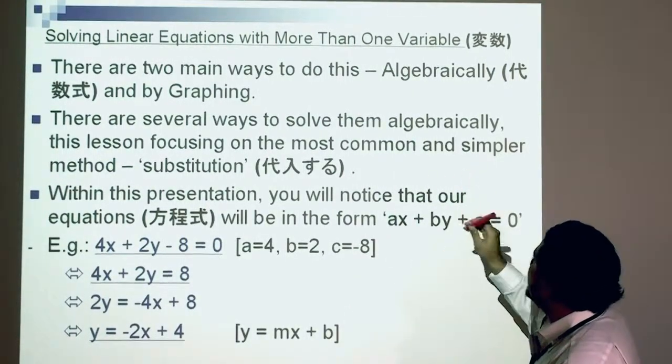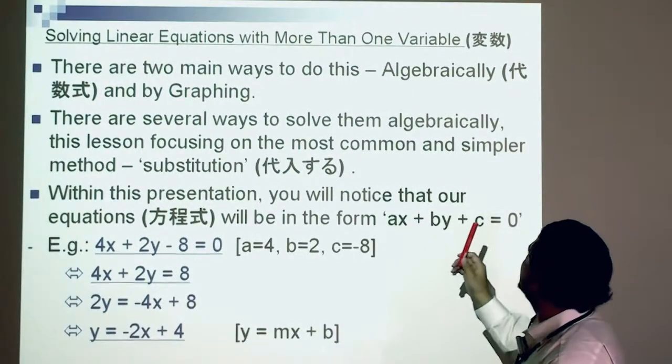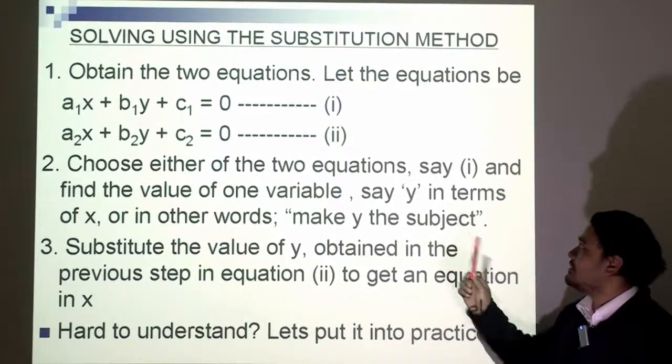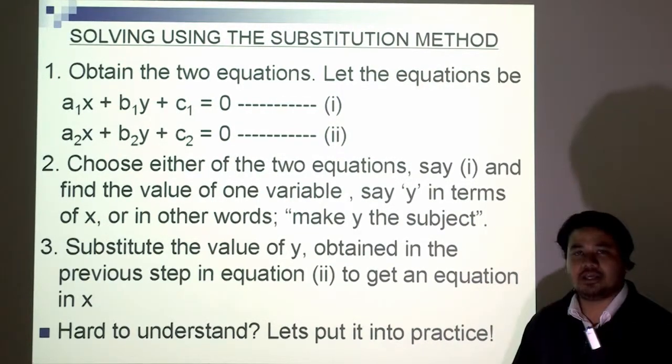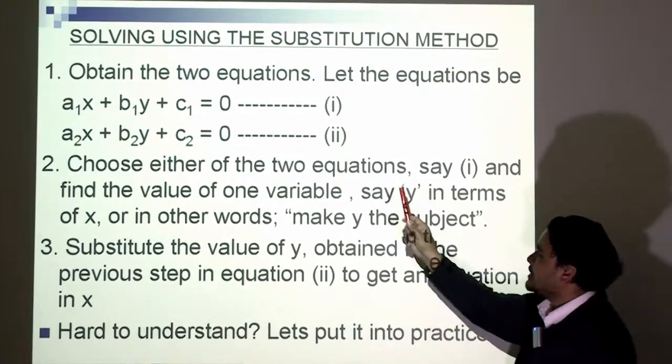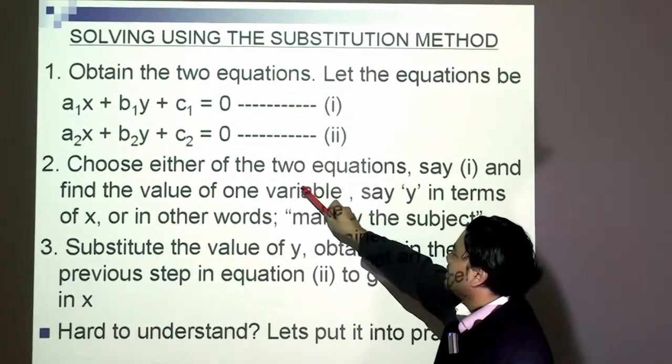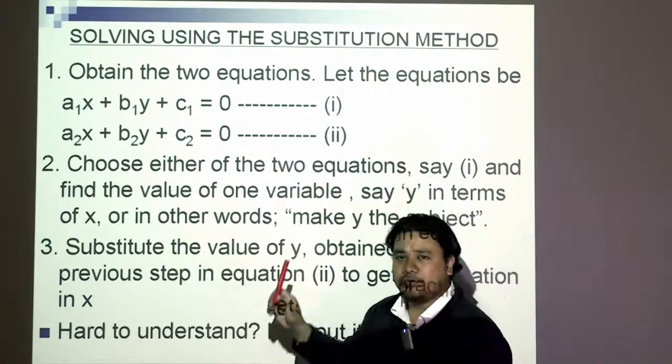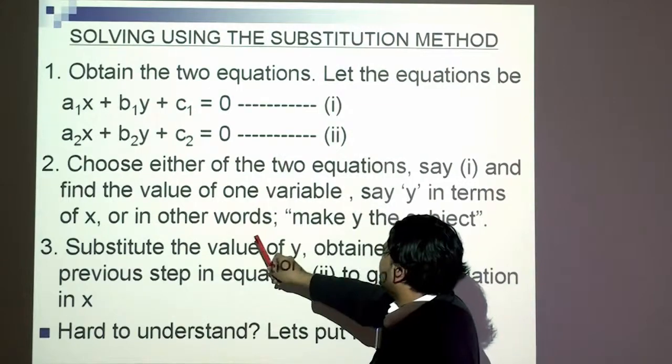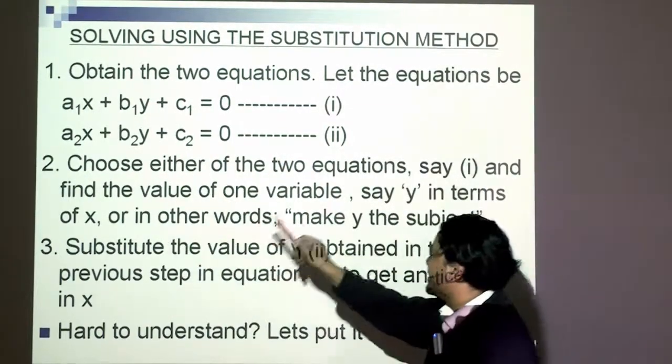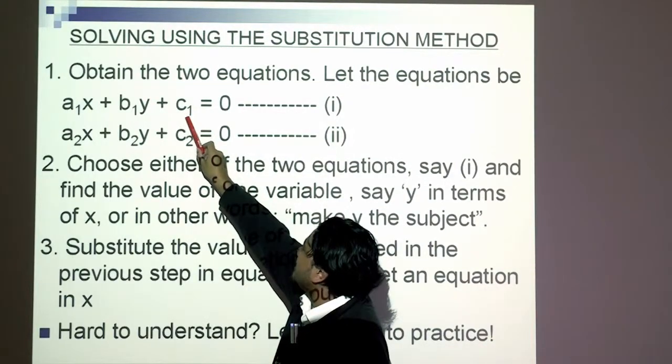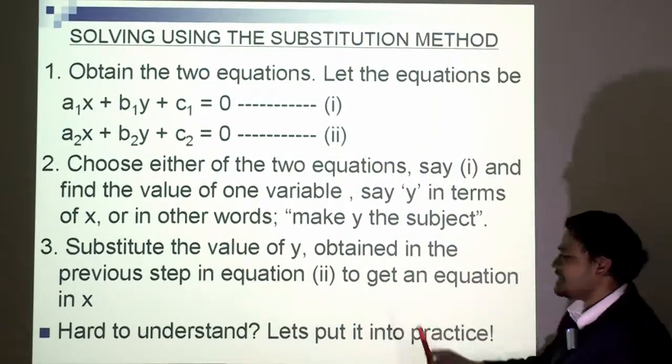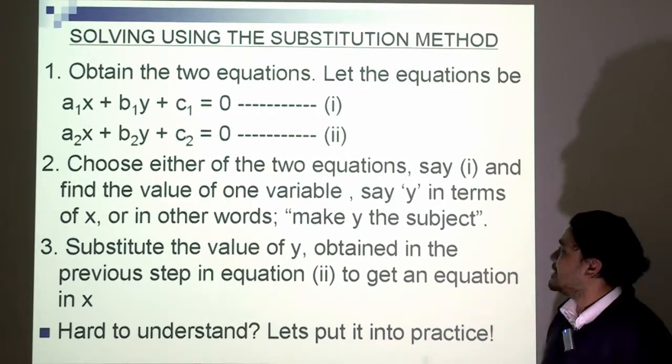Just a reminder that another popular method we will be talking about later is called the elimination method. So let's move on. Solving a linear equation with more than one variable using the substitution method. Here we're going to look at two equations. The idea is to choose either of the two equations, for example one, and find the value of one variable. You can find the value of x or y. In other words, we can make y the subject or make x the subject. So once we isolate x or make x the subject, we substitute that value into the other equation. Sounds a bit hard to understand, so let's work on an example now.